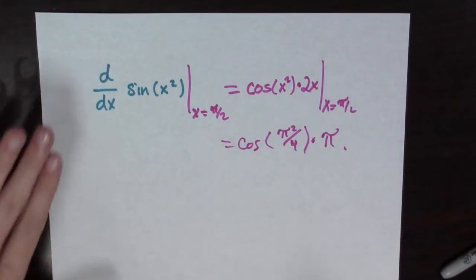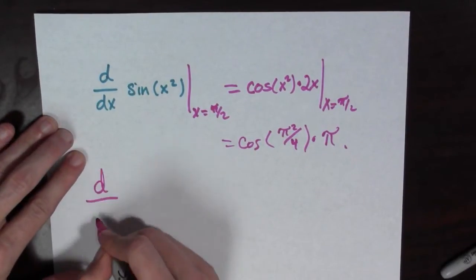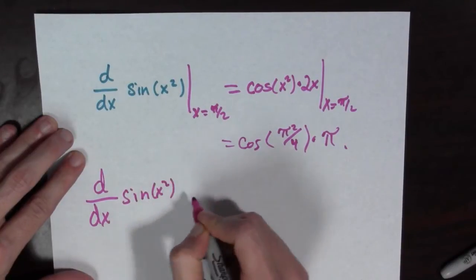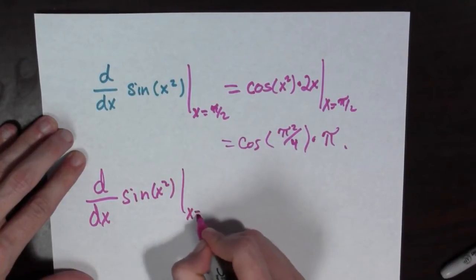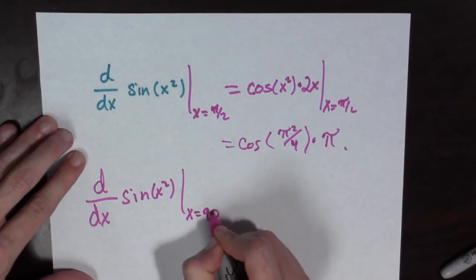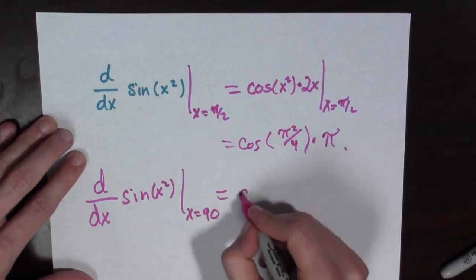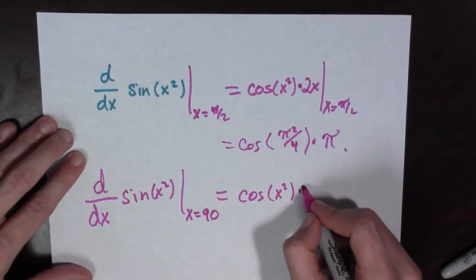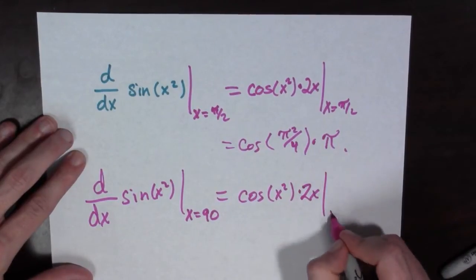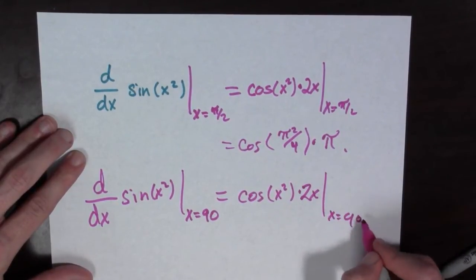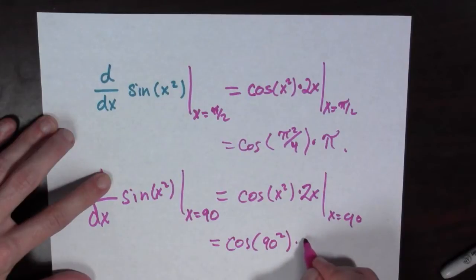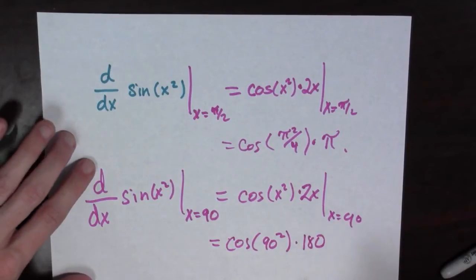Alright, that's great. But what if I evaluate this thing, d over dx of sine of x squared, evaluated at x equals 90 degrees. This is equal to cosine of x squared times 2x evaluated at x equals 90.